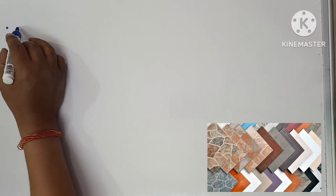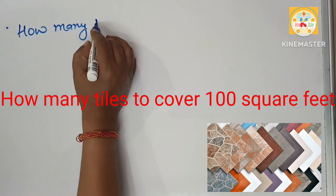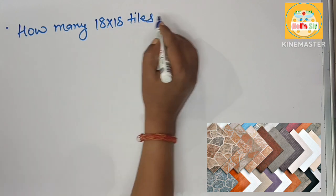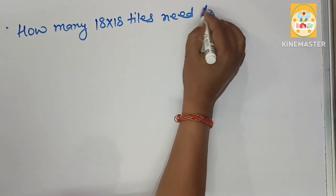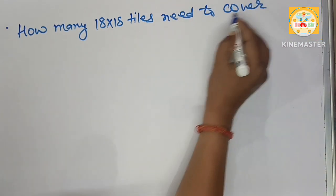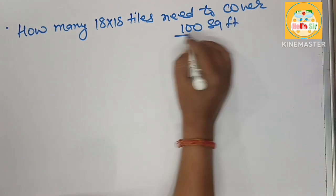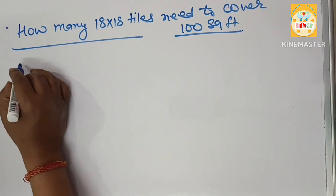You will learn how many 18 inches by 18 inches tiles are needed to cover 100 square foot area. It means the given floor area.